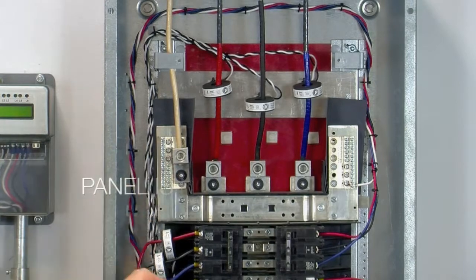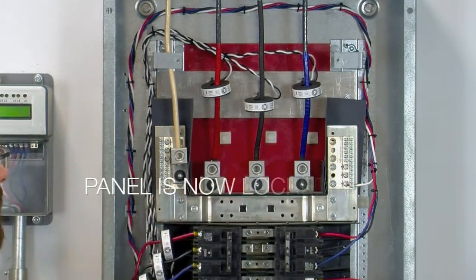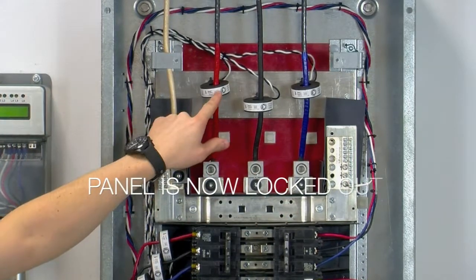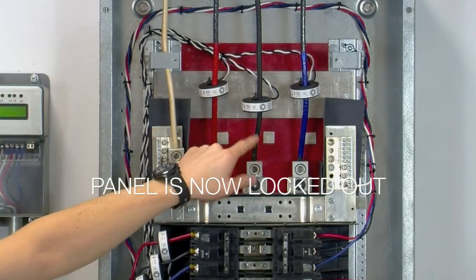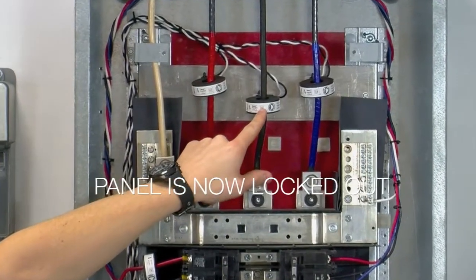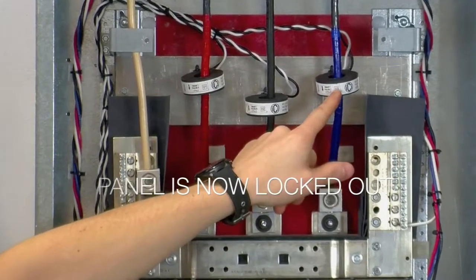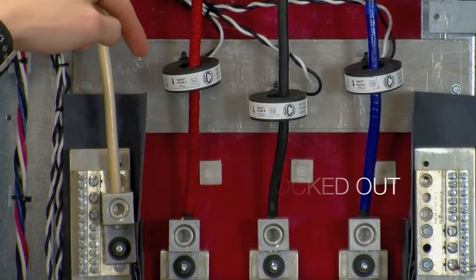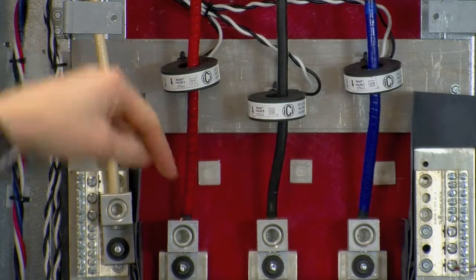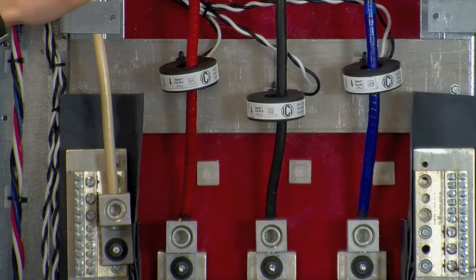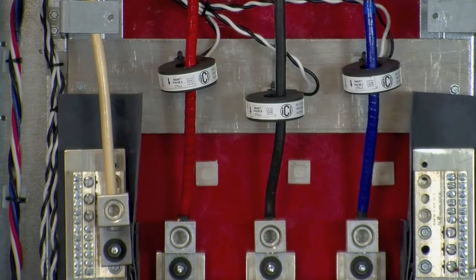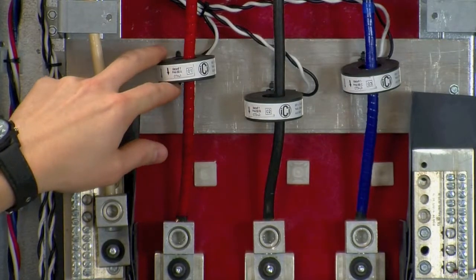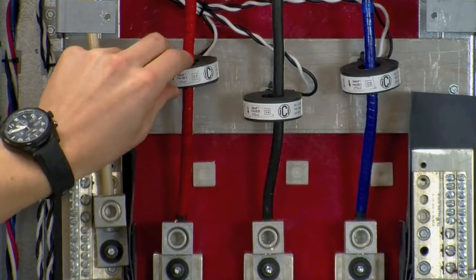Starting at the mains, use an Allen key to loosen off the lugs. We're going to install CT1 on phase A or line 1, CT2 on phase B or line 2, and CT3 on phase C or line 3. Note that the direction arrow must point in towards the breakers, as current flows in from the top of the panel down into the breakers. You can use adhesive mounting pads in combination with zip ties to hold the CTs firmly in place.